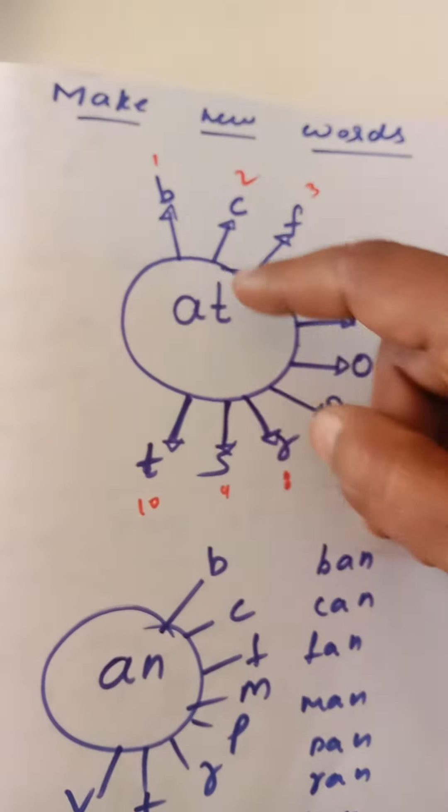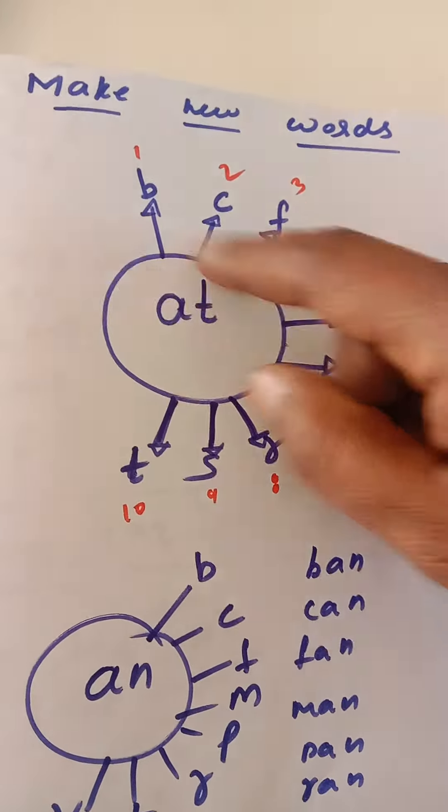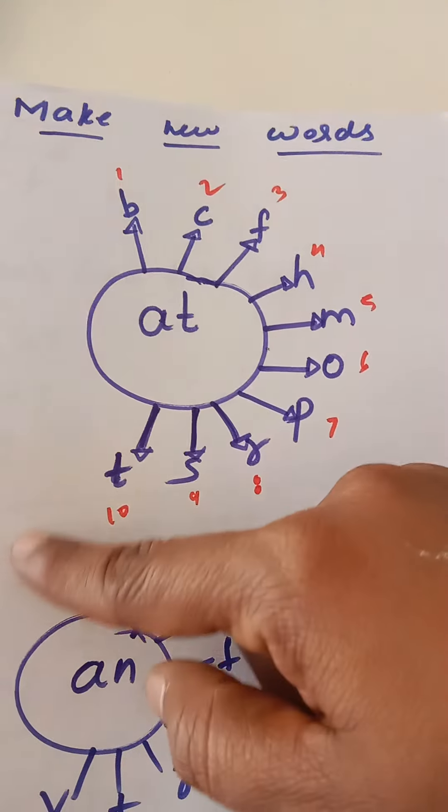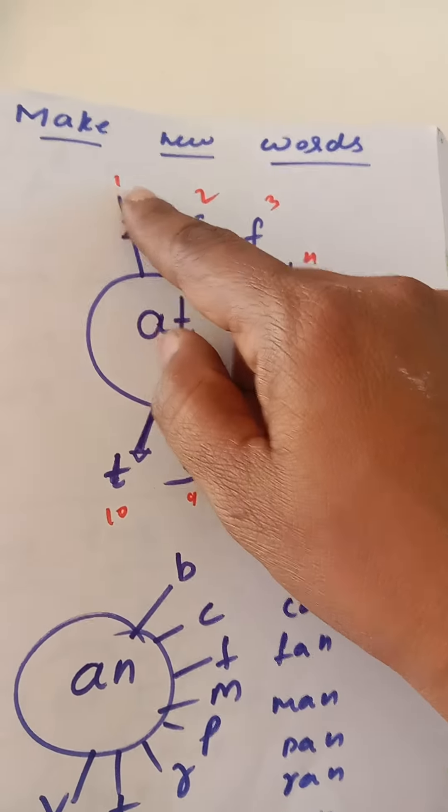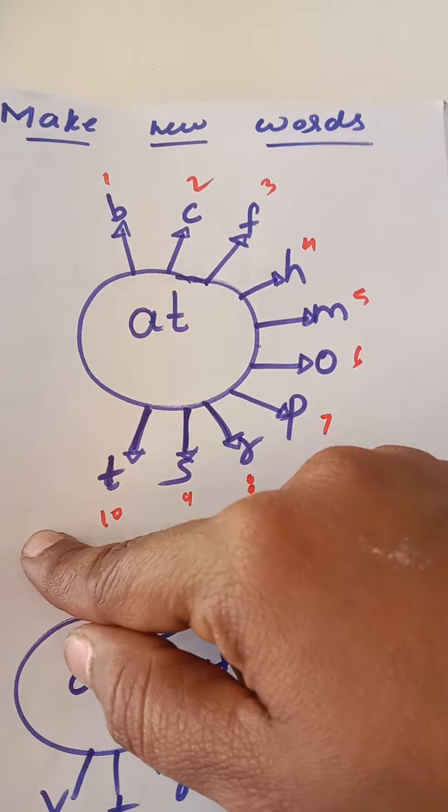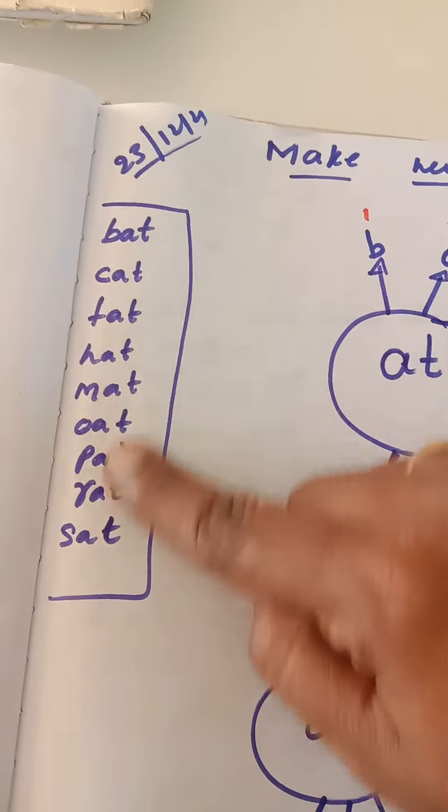Here I gave an example. At in the middle and at least 10 alphabets around. I gave the numbers to the alphabets also so that it will be easy for us to make new words and write aside.